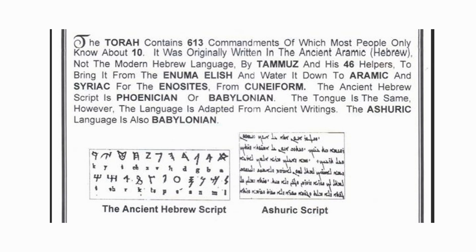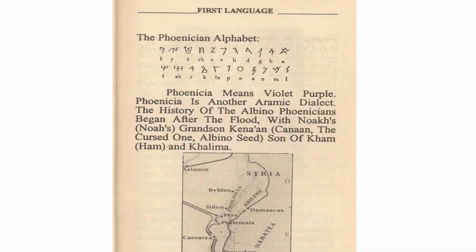In time, it went from ancient Hebrew script or Aramaic script to Ashuric script. Ashuric came from ancient Aramaic. The Phoenician script — if you pay close attention — is really the same as ancient Aramaic. Phoenician, Babylonian — the different names just denote different people of different areas, but they spoke the same tongue and the same script, which gradually changed over time with people being in so many different areas.